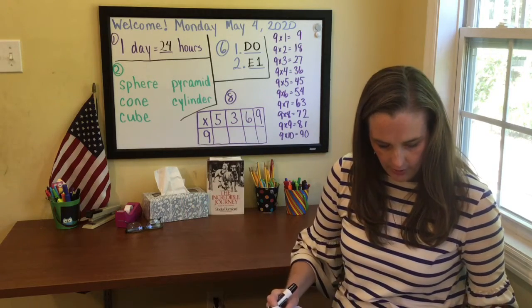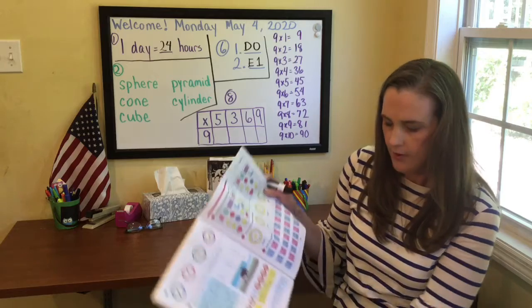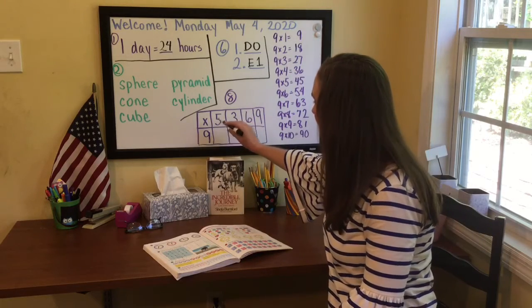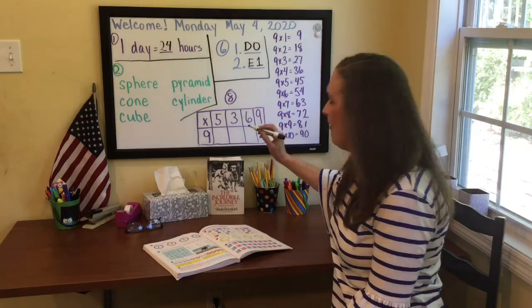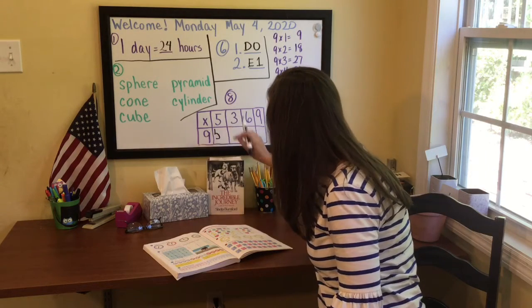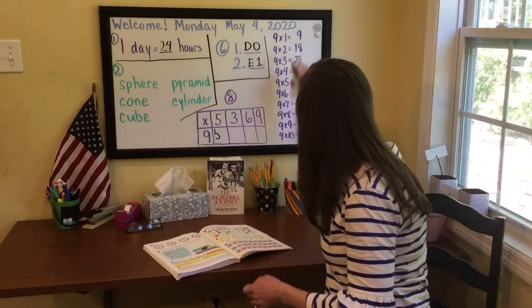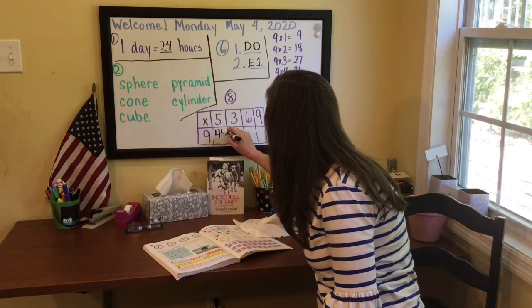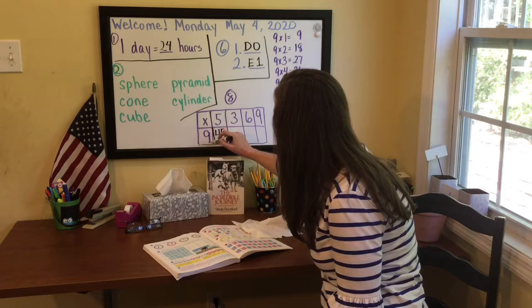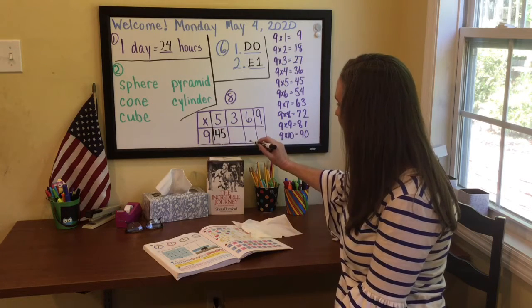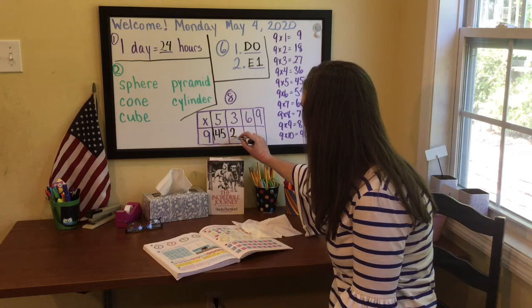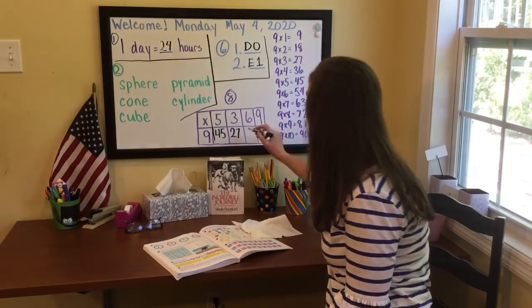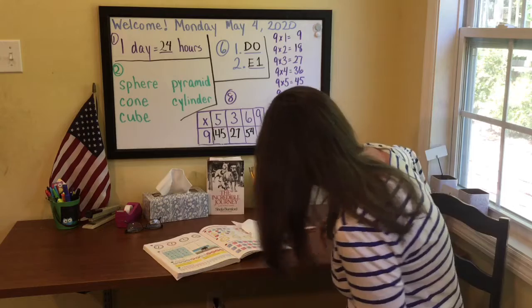On part eight, you are going to be multiplying by fours and by nines. I thought we'd do some of the first ones together. Nine times five equals 45. Nine times three is 27. And nine times six is 54. We'll stop there because I want to show you something.